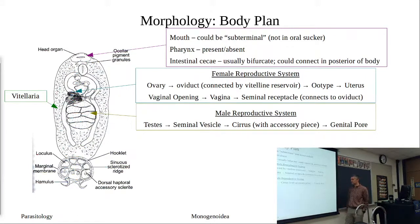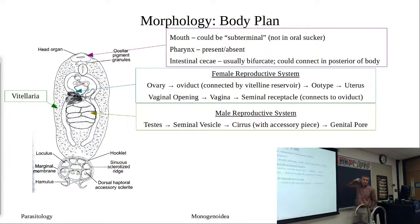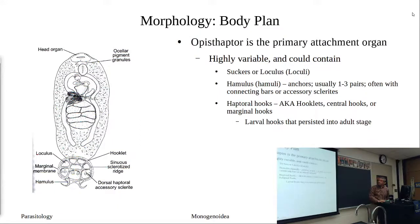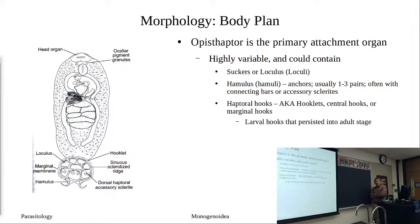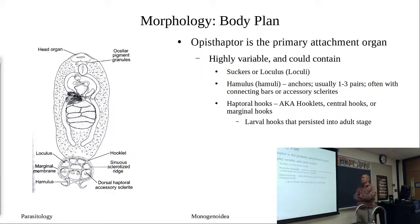We will see some of those sclerotized structures on our slides. Note again that the male system is separate from the female system. The opisthaptor is our primary attachment organ — it's very important because the success of the worm depends on how well they can stay attached to the host. This structure is highly variable, varying by species, genus, and family.